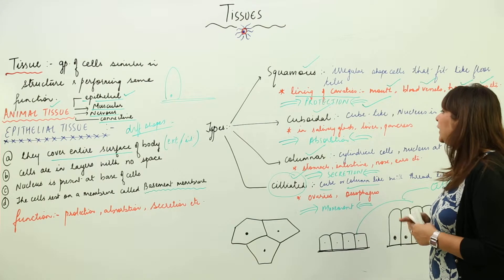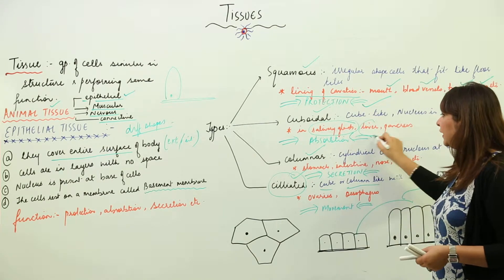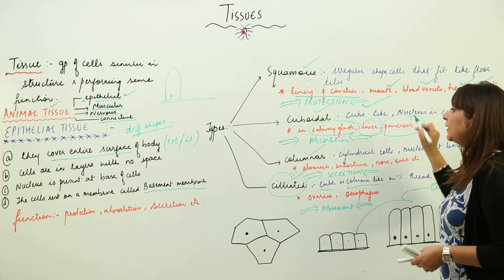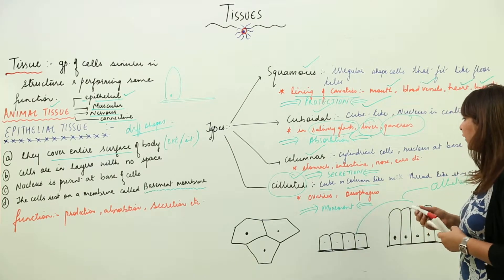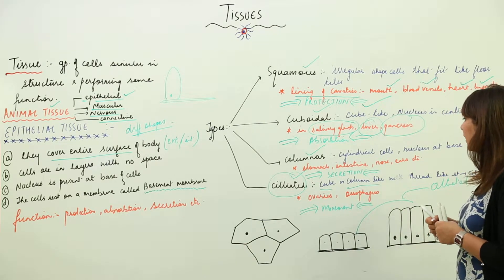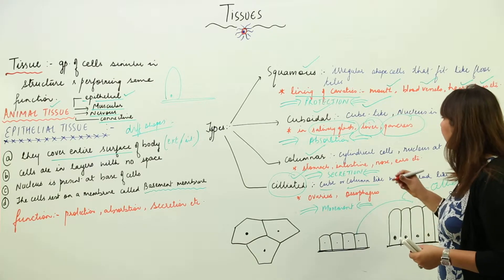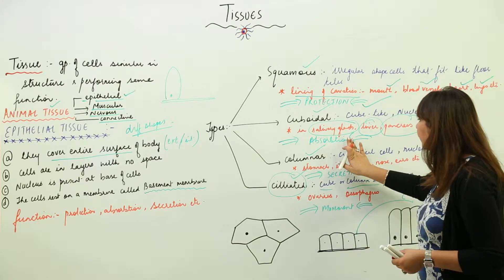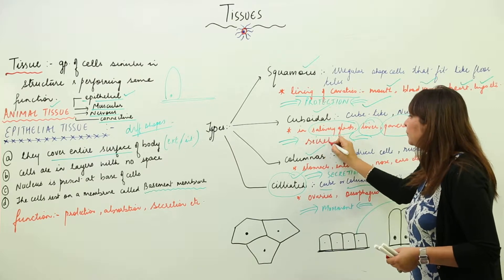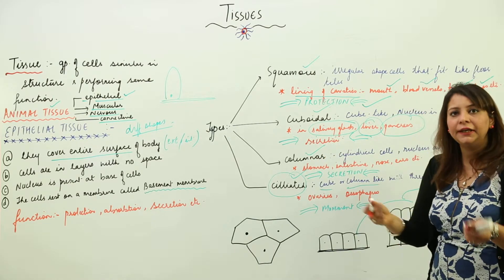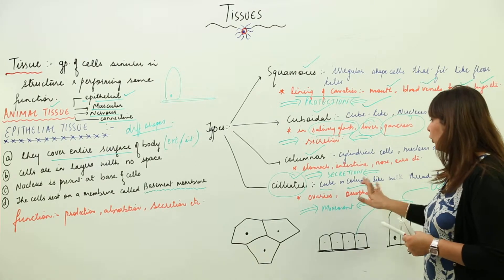Cuboidal epithelium has cube-like shaped cells. They are present in the salivary gland, liver, and pancreas. Their function is secretion — they help in secreting certain substances.